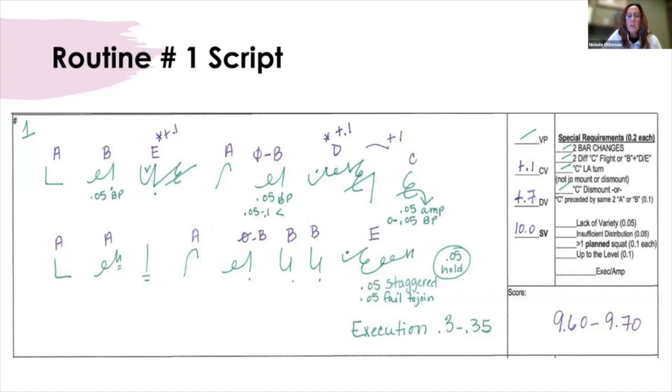And then two giants into her dismount, a full in double back and 0.5 for the feet staggered on the landing and 0.5 for failure to join the heels together. And then that also was an example of our 0.5 failure to hold.